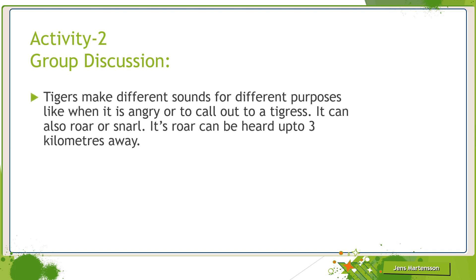Tigers make different sounds for different purposes — like when angry or to call out to other tigers. They can also roar or snarl, and their roar can be heard up to three kilometers away. Growls, snarls and hisses are used in aggressive and defensive encounters, whereas grunting, kneeling, purring and woofing are some other noises that tigers make when they are in close contact.